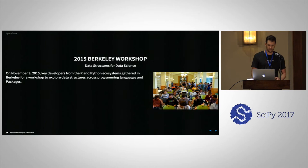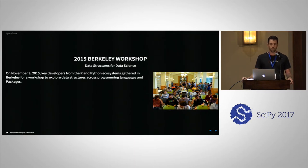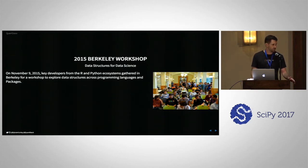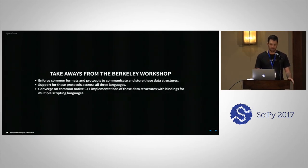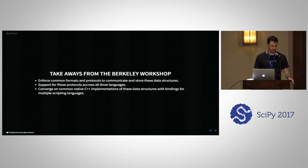Back in 2015, a number of core developers and key members of the communities for R, Python, and Julia gathered in Berkeley for a workshop. They wanted to explore data structures across programming languages and packages. The main takeaway was that we should probably try to enforce common formats and protocols to communicate and store these data structures, and support these protocols across all three languages.